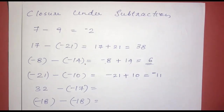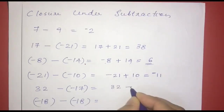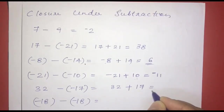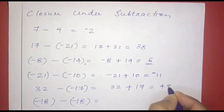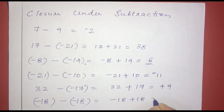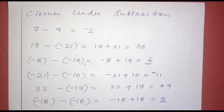Next one: negative 18 minus negative 18. Negative of minus becomes positive: negative 18 plus 18. Opposite signs, same magnitude, result is 0. So 18 minus 18 equals 0.